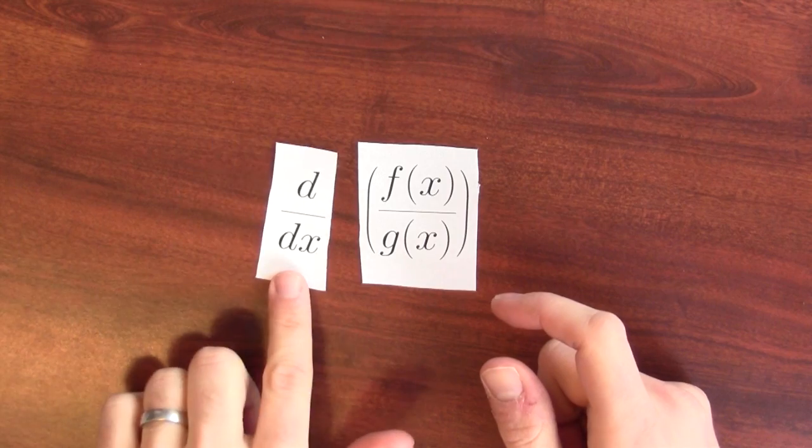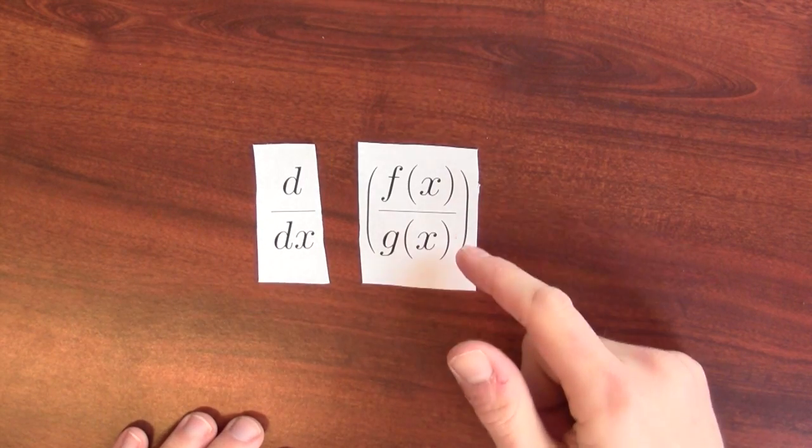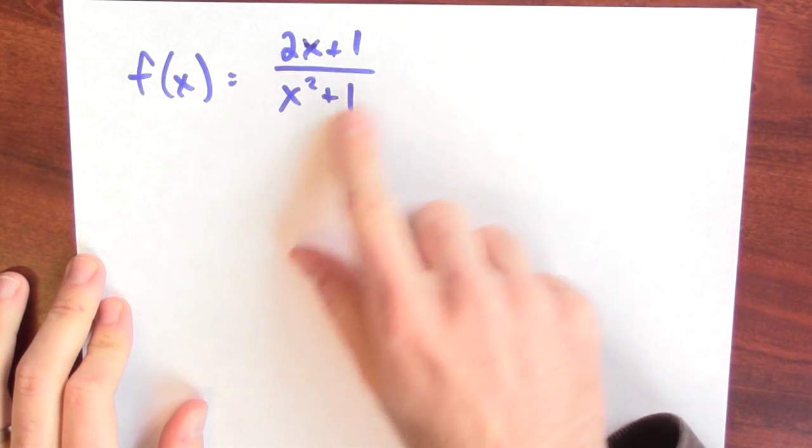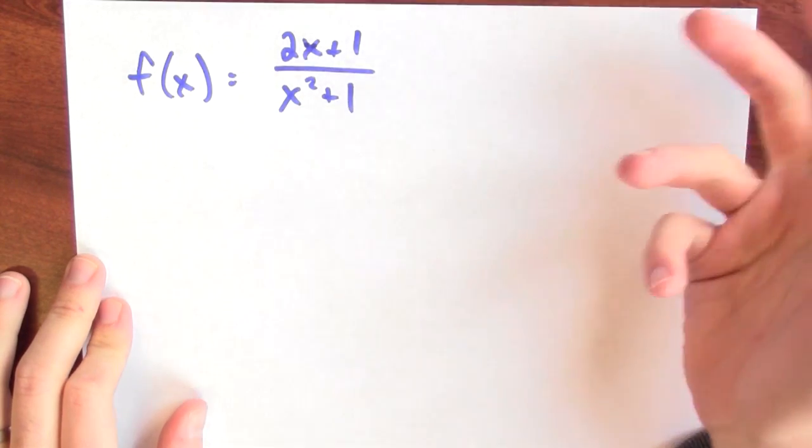Given a fraction, I'd like to be able to differentiate that fraction. I'd like to be able to differentiate a really complicated looking function like f of x equals 2x plus 1 divided by x squared plus 1, for instance. But we're stuck immediately because we don't have any way to differentiate quotients until now.